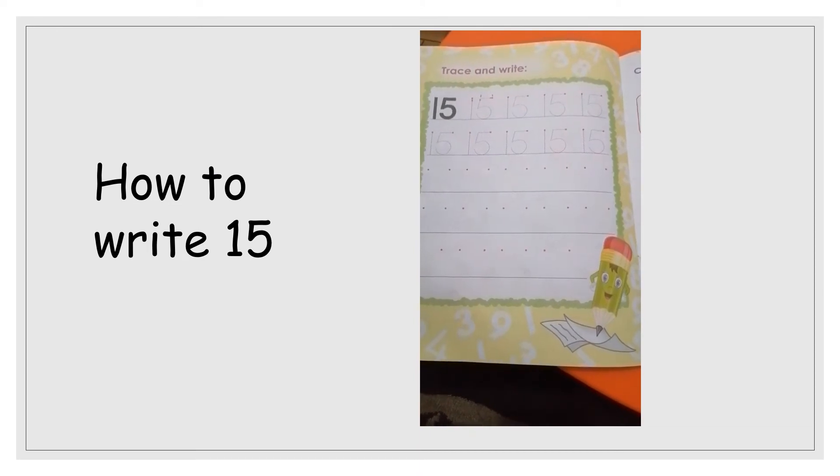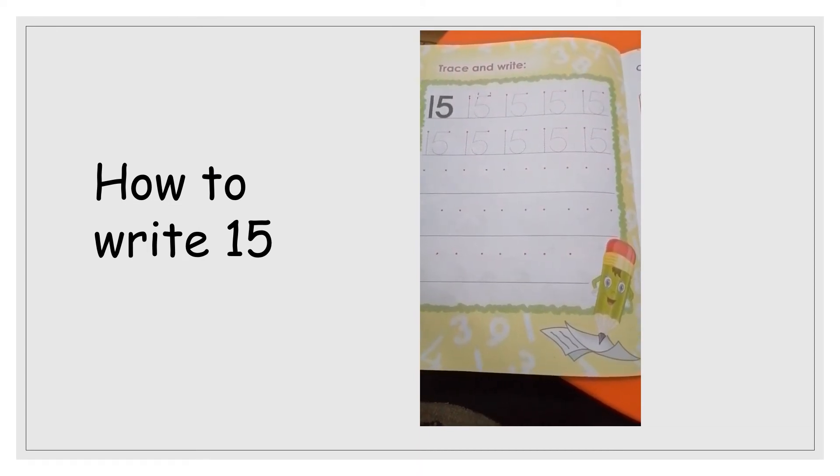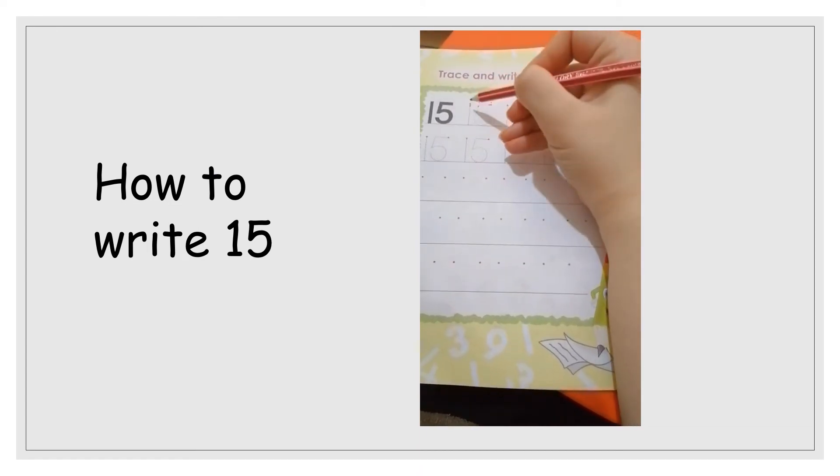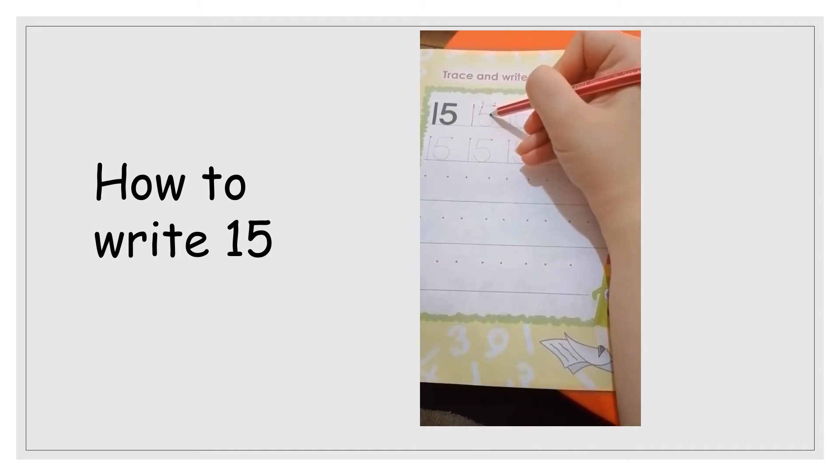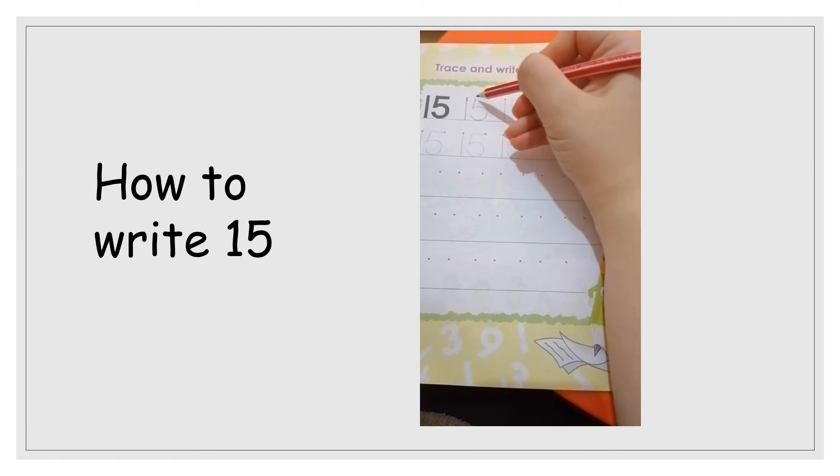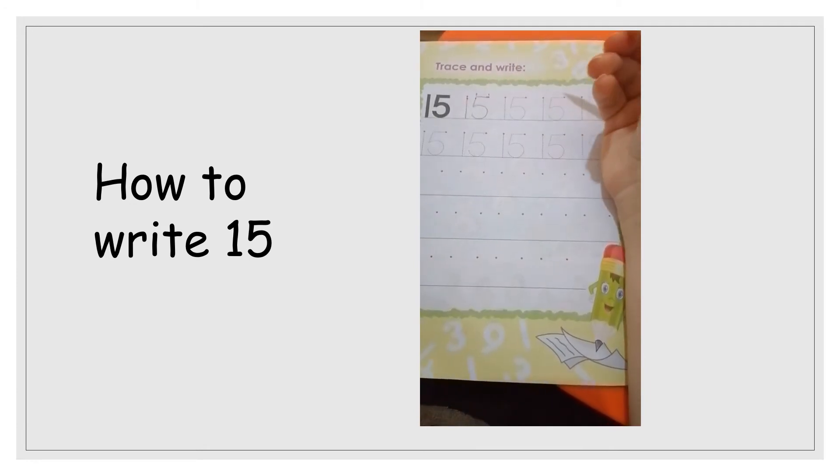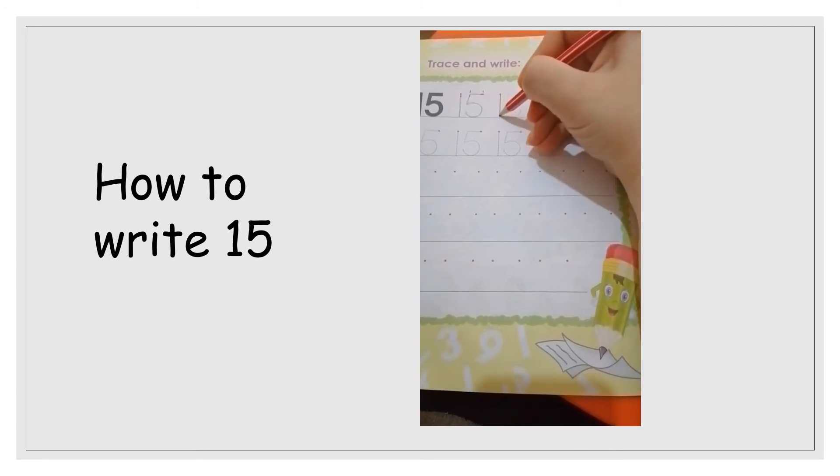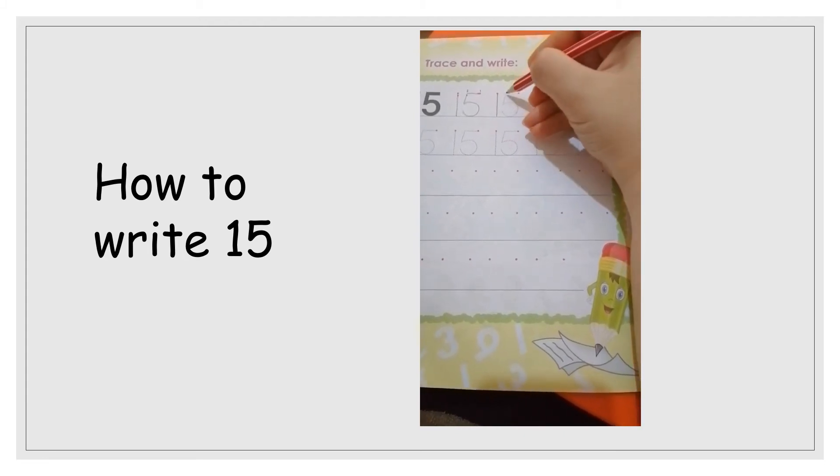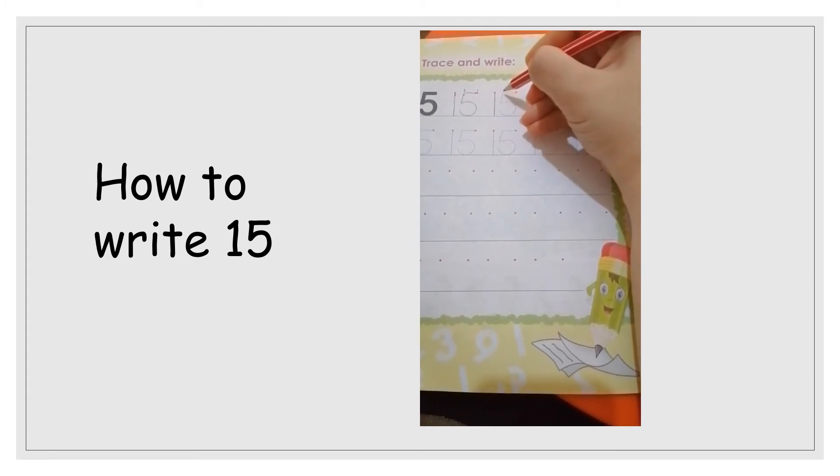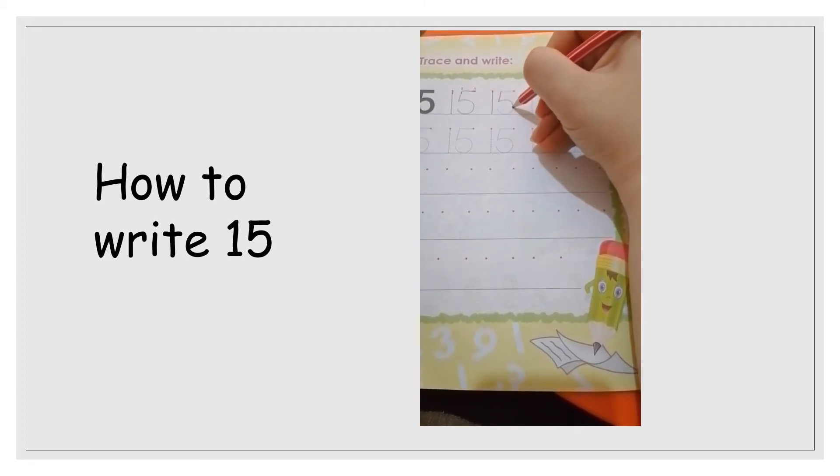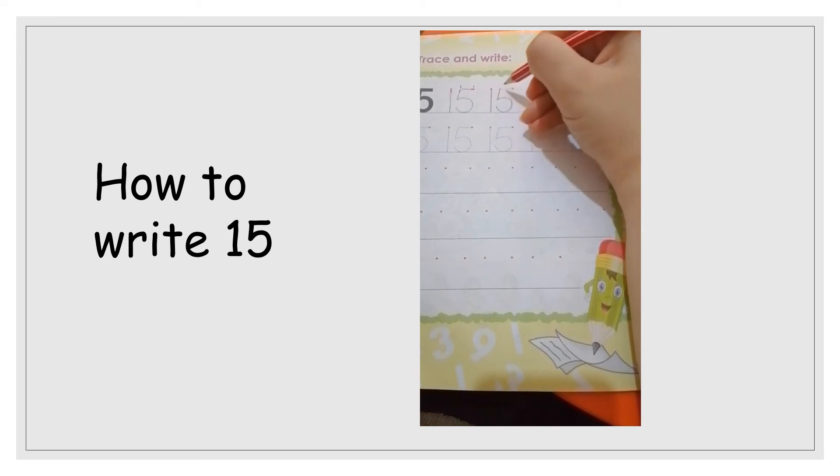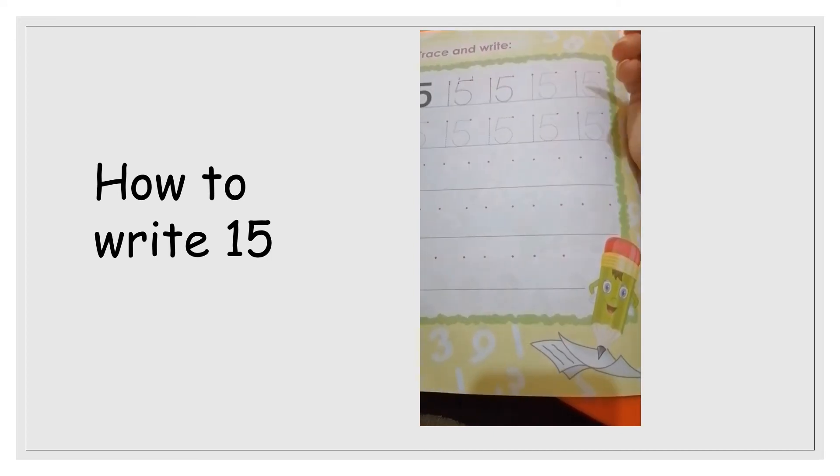Now we will learn to write number 15. Number 15 is number 1 with number 5. First we will write number 1, then number 5. Can you remember how we write 5? Line and big half circle. Then we will put a line here.